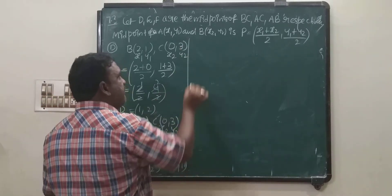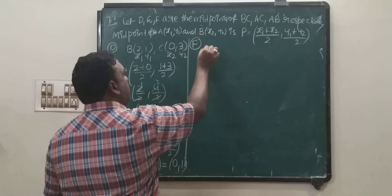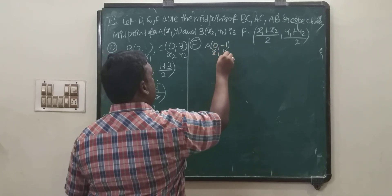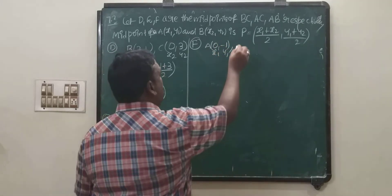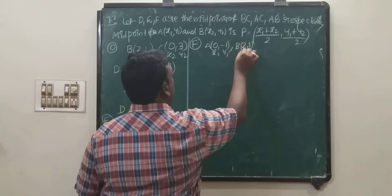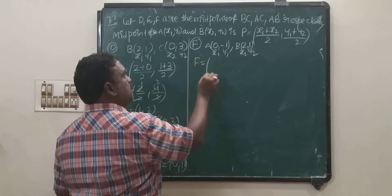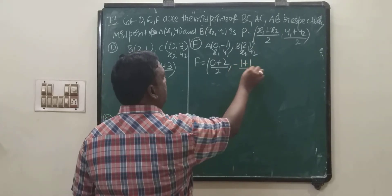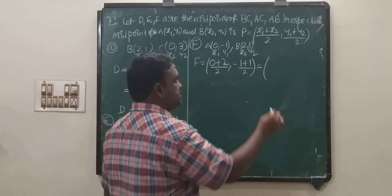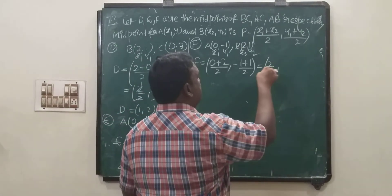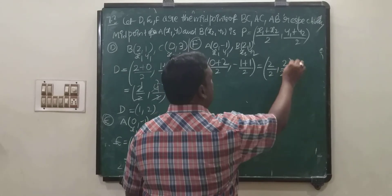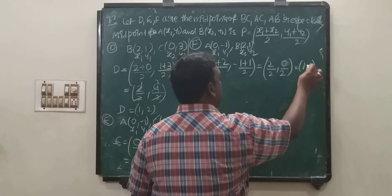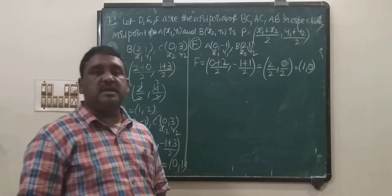Similarly find out F. F is the midpoint of AB. A is (0, -1) — let it be x1, y1. B is (2, 1) — let it be x2, y2. F equals ((0 plus 2)/2, (-1 plus 1)/2) = (2/2, 0/2) = (1, 0). All three midpoints are completed.